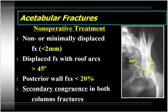The roof arcs, defined by Joel Matta, basically refer to the weight-bearing dome of the acetabulum — a 45-degree arc. On this obturator oblique view, we've measured the roof arc at 66 degrees. Assuming the iliac oblique and AP pelvis views also showed roof arc measurements greater than 45 degrees, this fracture can do very well with nonoperative treatment. Posterior wall fractures in which less than 20% of the wall is involved can be treated nonoperatively. Secondary congruence in both-column fractures — where the columns remain relatively well reduced to one another despite significant displacement — is also an indication for nonoperative treatment.